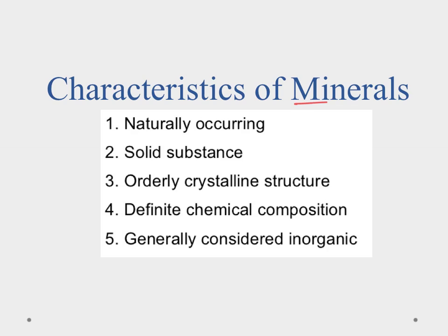So what makes a mineral? Basically they have to have five different things about them, and if all five of those criteria are met then it's considered a mineral. The first is it has to be naturally occurring, which means that we find it out in nature. It can't be made in a lab — it has to be found in nature. We can recreate it, but it's not a mineral unless it's made in nature.